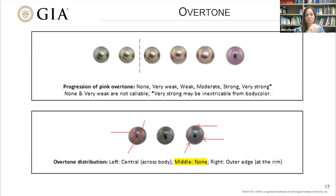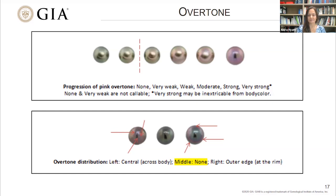We don't quantify overtone strength — we simply note its presence or absence and don't use terms like moderate or strong. While Tahitian pearls tend to display the widest range of colors and strongest overtones and orients, both can be found on all types of pearls. Freshwater pearls also have a wide range of overtone colors and strengths. South Sea pearls tend to display pink or green overtones or orient. Akoya pearls are almost all subject to processing to enhance their pink overtones, so GIA does not call it as it is not naturally occurring.